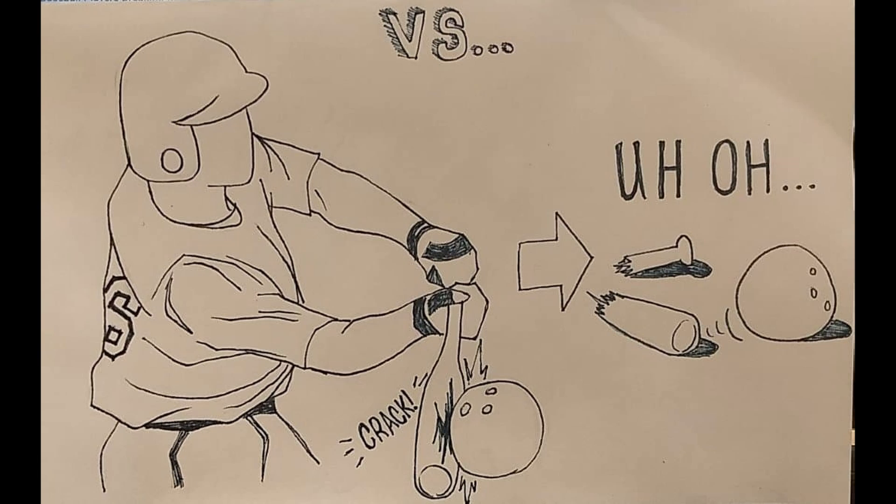On the other hand, if the bat collided with a bowling ball, the bat wouldn't send it flying. This is because the bowling ball has a much higher mass than a baseball, so the impulse delivered by the bat to the ball wouldn't give it as much velocity.